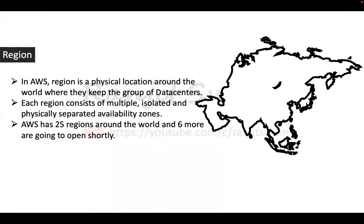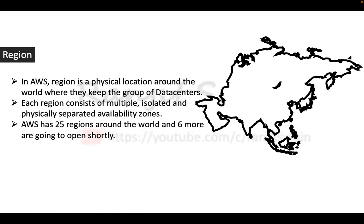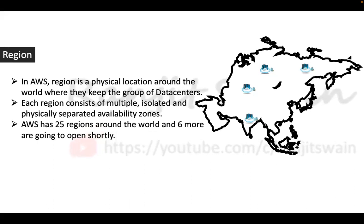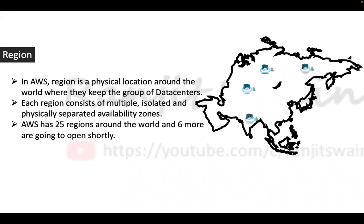First key term: Region. In AWS, a region is a physical location around the world where they keep a group of data centers. Each region consists of multiple isolated and physically separated availability zones. AWS has 25 regions around the world, with six more opening shortly.